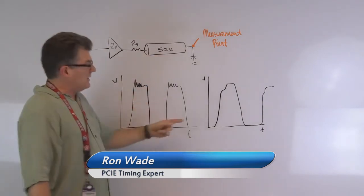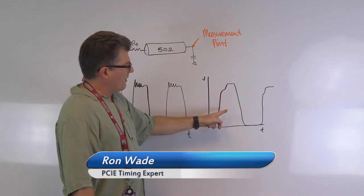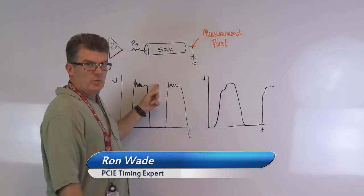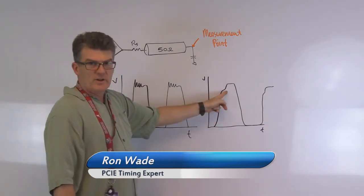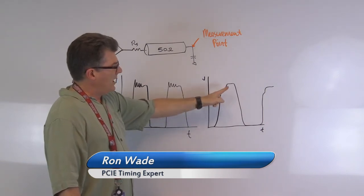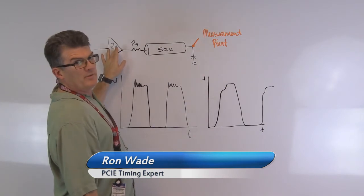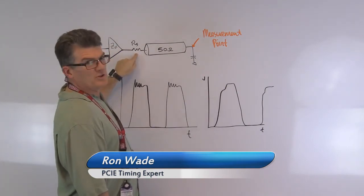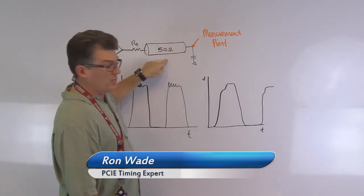The other thing you might see is a waveform where instead of having ringing on one of the edges, you have a step on one of the edges. And if you recall from earlier videos, that means that the sum of the output impedance plus the resistor is greater than the 50 ohms.